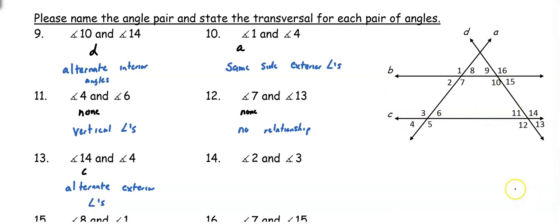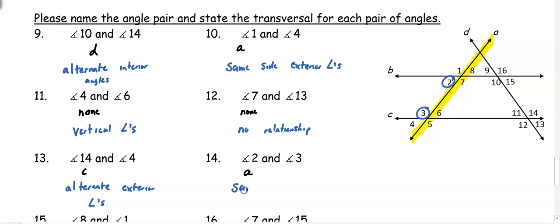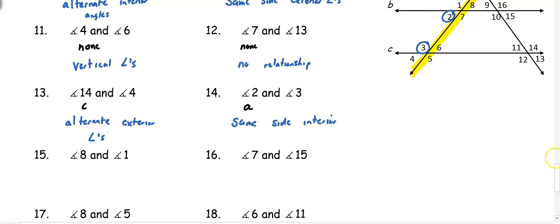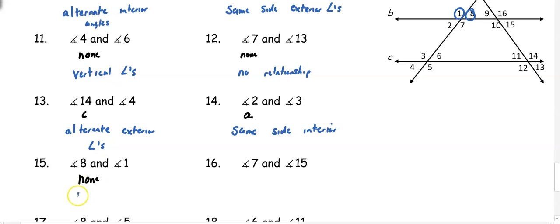Number 14: angle 2 and angle 3. Both angles are touching line A, which makes A our transversal since it goes through the two lines they're touching. These angles are between the other two lines, so they're interior, and they're on the same side of the transversal — so this is same side interior angles. Number 15: angle 8 and angle 1 are in the same group, so they can only be a linear pair or vertical. Since they're next to each other and form a straight line, they are a linear pair with no transversal.